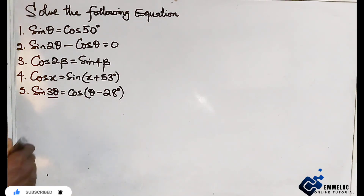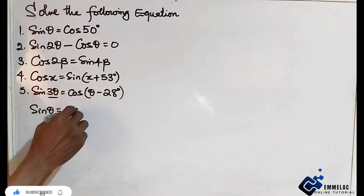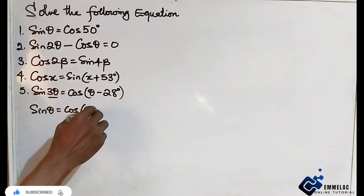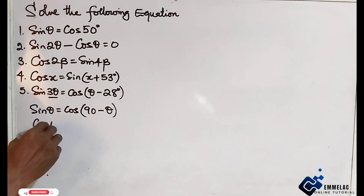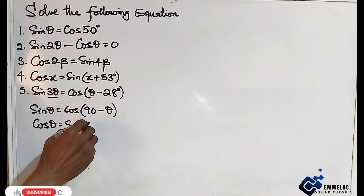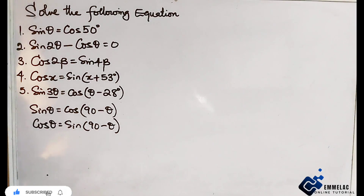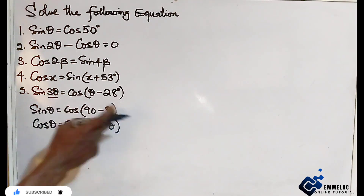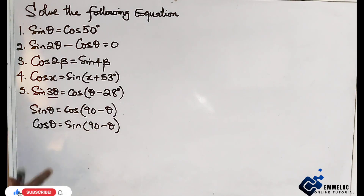Let's begin by recalling trigonometry and complementary angles, where we have sine theta equals cos of 90 minus theta, and cos theta equals sine of 90 minus theta. This gives us the complementary angles in a right angle triangle, which implies that this angle must be less than 90 degrees.